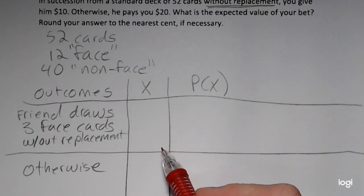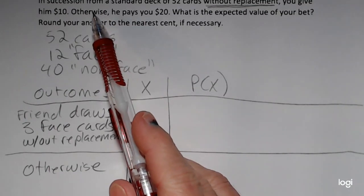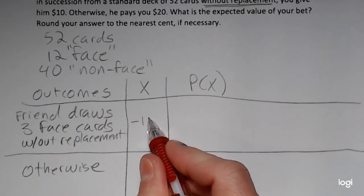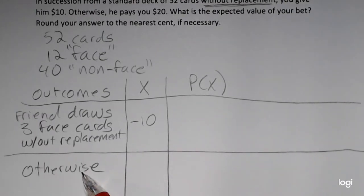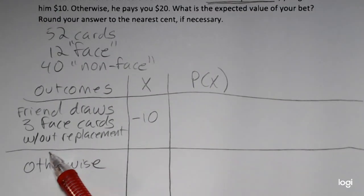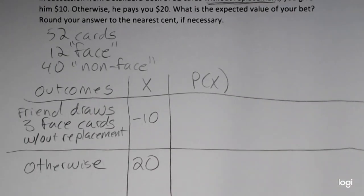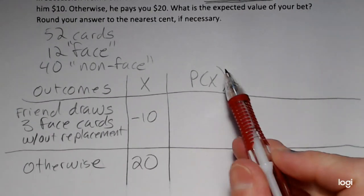If the friend draws three face cards, it says in the problem that you give him $10. So if you're giving out money, that's going to be negative $10 for you. If the friend does not draw three face cards, and that encompasses a lot of outcomes or sub-outcomes there, otherwise you get $20. So that's going to be a positive $20. So we have the first couple of pieces for the expected value formula. Now, it's a little tricky to find this piece.